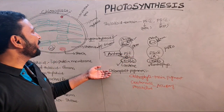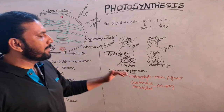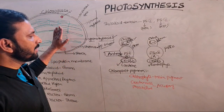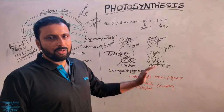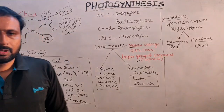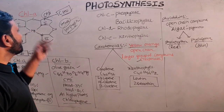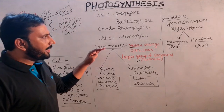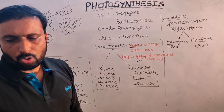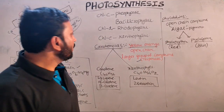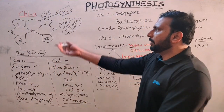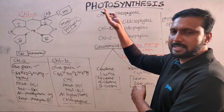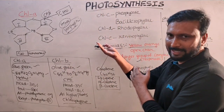In the chloroplast, the main pigment is chlorophyll, and some other accessory pigments are also present — they are carotenes and xanthophylls. The chlorophyll pigments are of different types: chlorophyll a, chlorophyll b, chlorophyll c, chlorophyll d, and chlorophyll e.